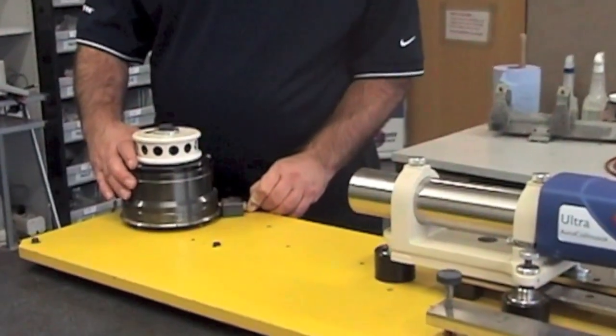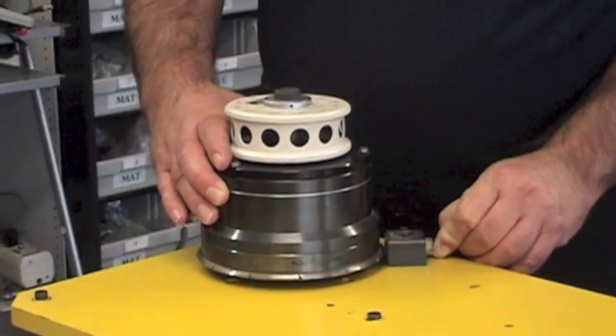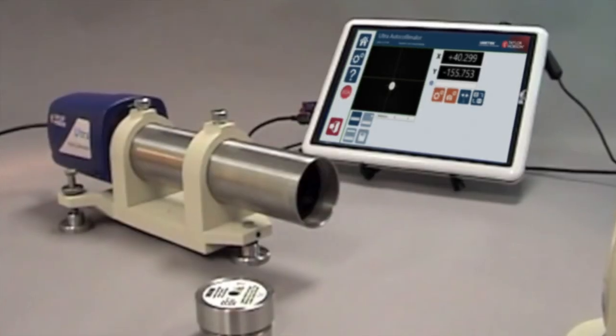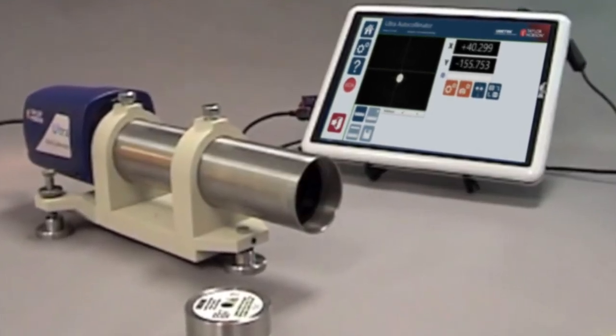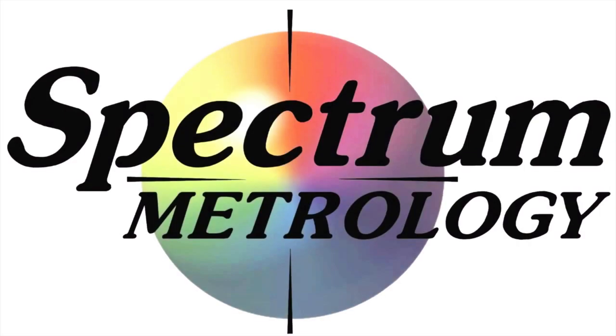as well as polygon indexing, table, and flatness software. The Ultra is used in applications such as aerospace, defense, and a whole host of other industries. The Ultra Autocollimator: precision, versatility, stability, where measurement matters.